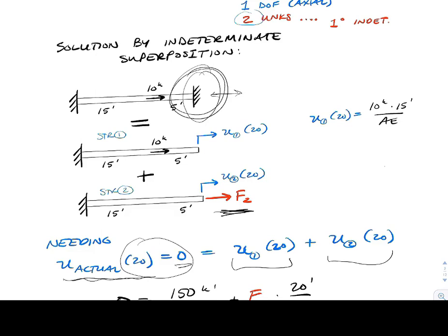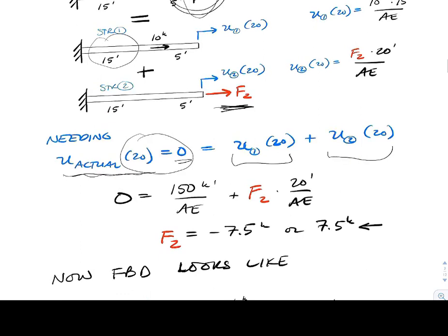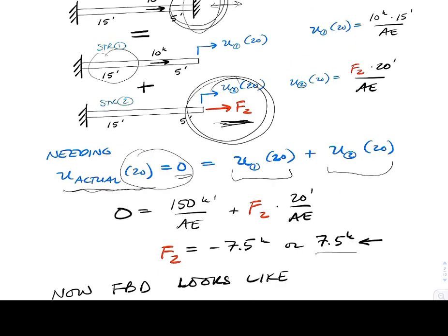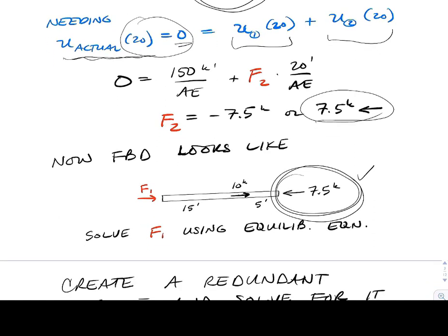We calculate: for structure 1, it's 10 kips times 15 feet over AE. For structure 2, it's F2 times 20 feet over AE. The math yields a negative value for F2, meaning F2 acts in the opposite direction from what was drawn. Going back to the whole-structure free body diagram, we've used the kinematic equation to solve for F2, and now we can solve for anything in the beam — including F1 and internal forces by cutting the beam open.